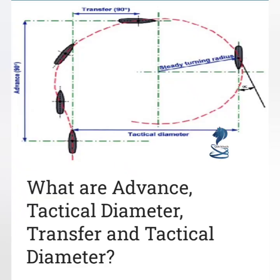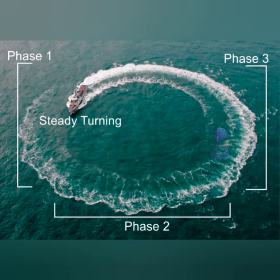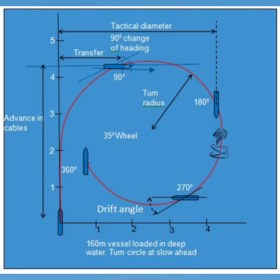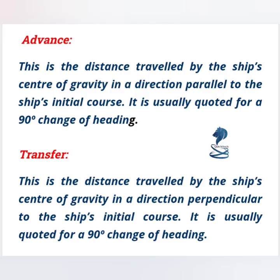Good day everyone. In this video we will learn about what is the turning circle of a ship. Merchant ships usually turn in a circle having a diameter of about 3 to 4 times the length between perpendiculars. The larger the rudder, the smaller will be the turning circle diameter.